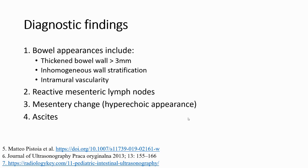For the diagnostic findings, we focus on the bowel wall, including bowel wall thickness — normal is less than 3 mm — homogeneous stratification, and intramural vascularity. If bowel wall thickness is more than 3 mm, with inhomogeneous stratification and increased intramural vascularity, it means the bowel has some disease.